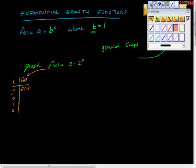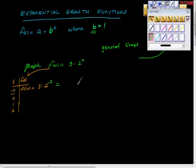Let's take f(-2), which is 3 times 2 to the power of negative 2. This is really important — you can't multiply the 3 times the 2 first. PEMDAS says we have to do our exponents before we do our multiplications, so please take your time.